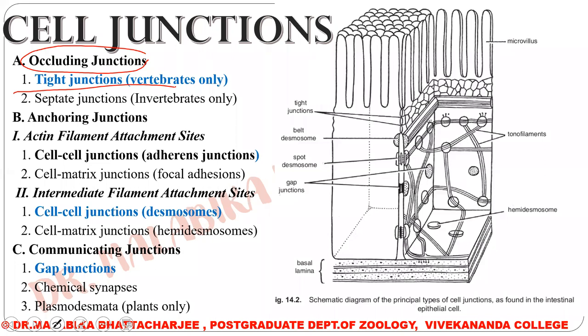These occluding junctions are the tight junctions. The two neighboring cells are very much tightly associated with each other. Then we will be doing the cell junctions — cell-cell junctions — under the adhering junctions. We will be doing the cell-cell junctions or the desmosome zone.